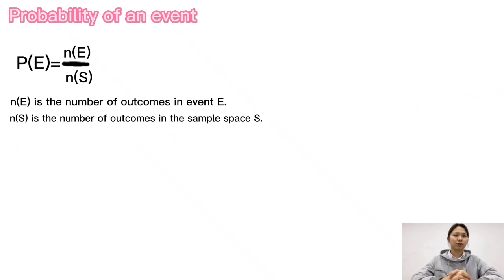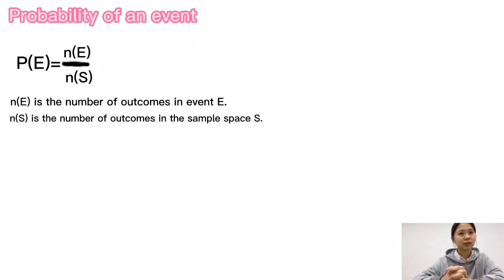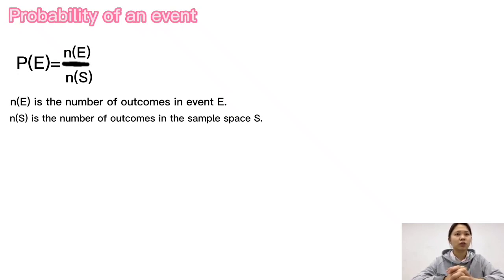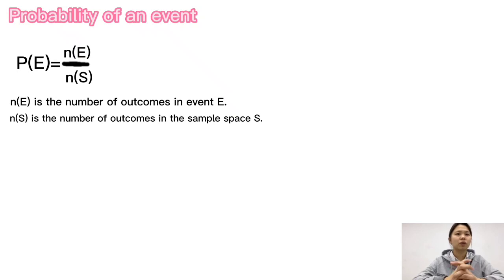Now we are ready to define the concept of probability of an event. Let E be an event in a sample space S in which all outcomes are equally likely to occur. Then the probability of event E is P(E) = N(E) / N(S), where N(E) is the number of outcomes in event E, and N(S) is the number of outcomes in the sample space S.